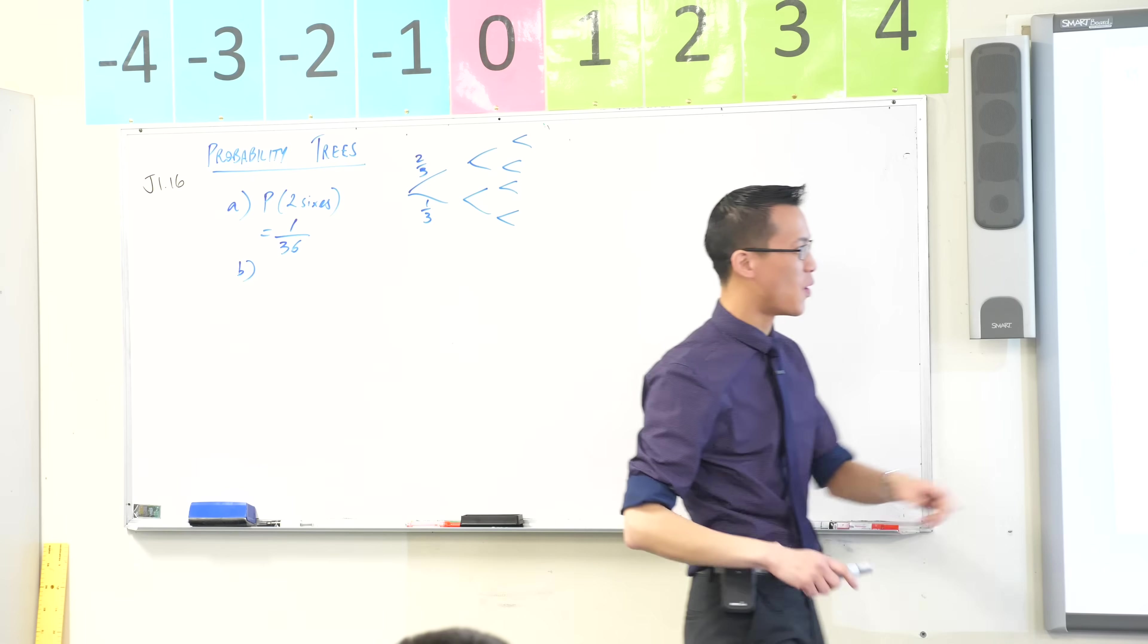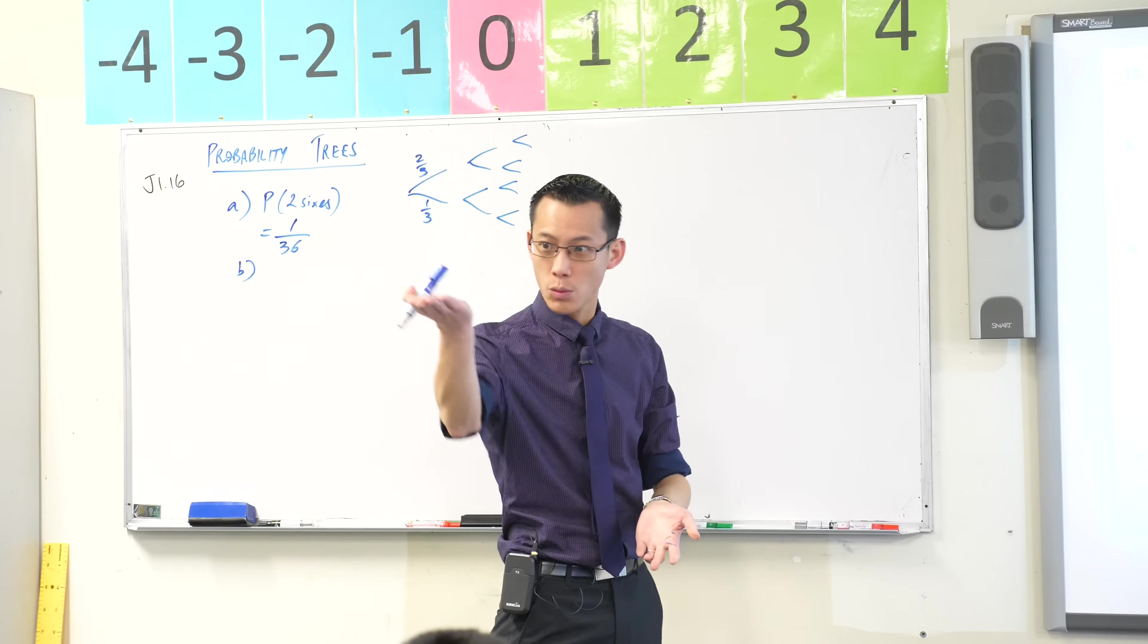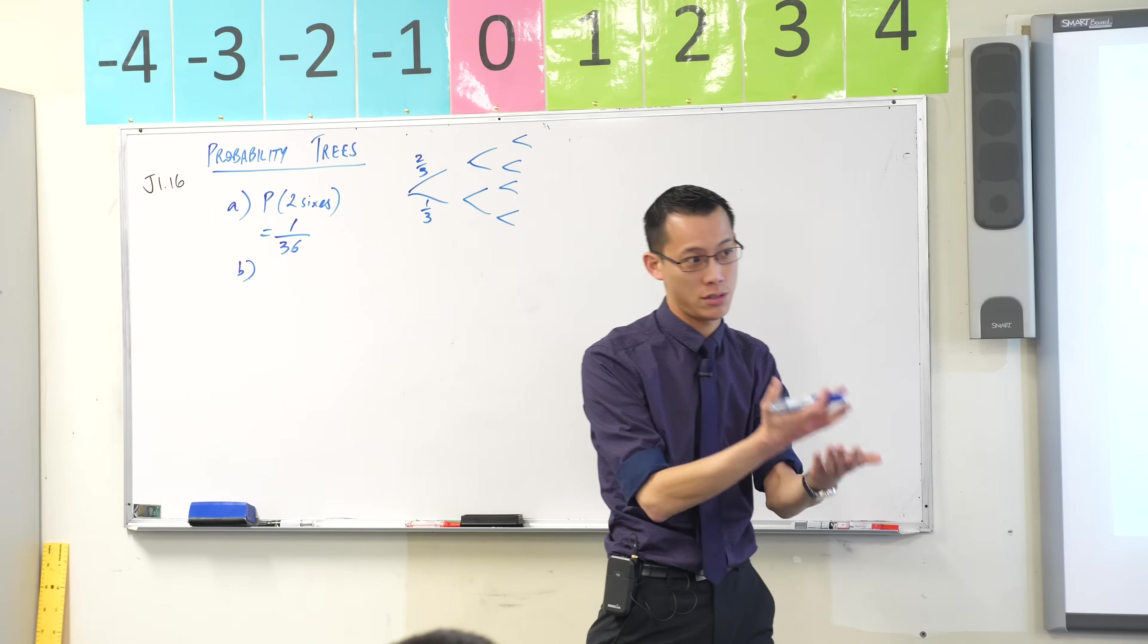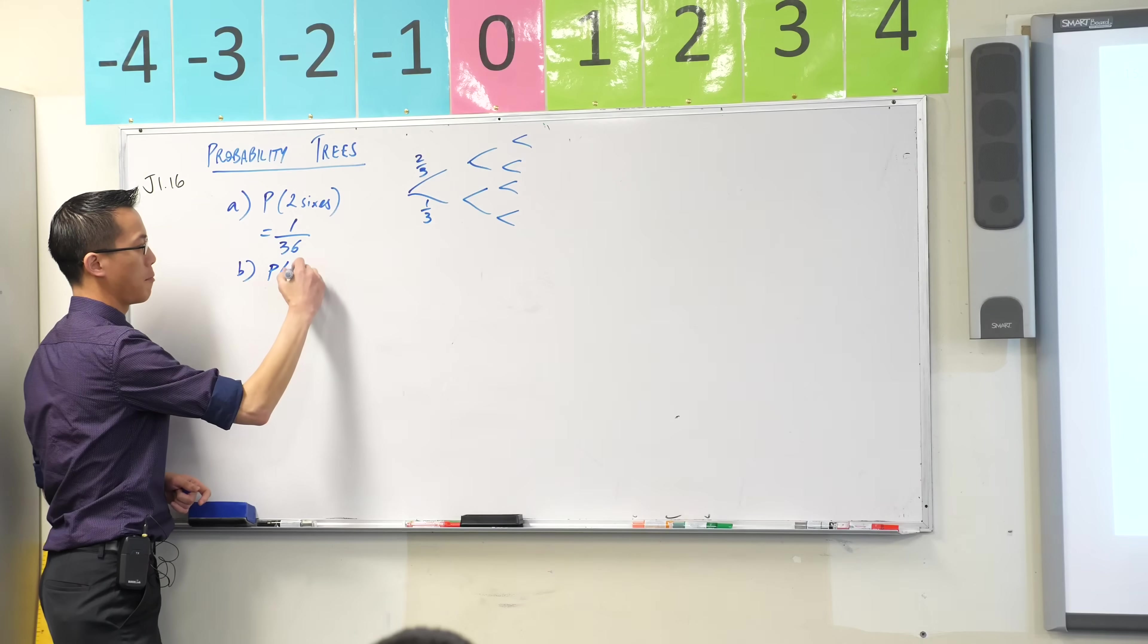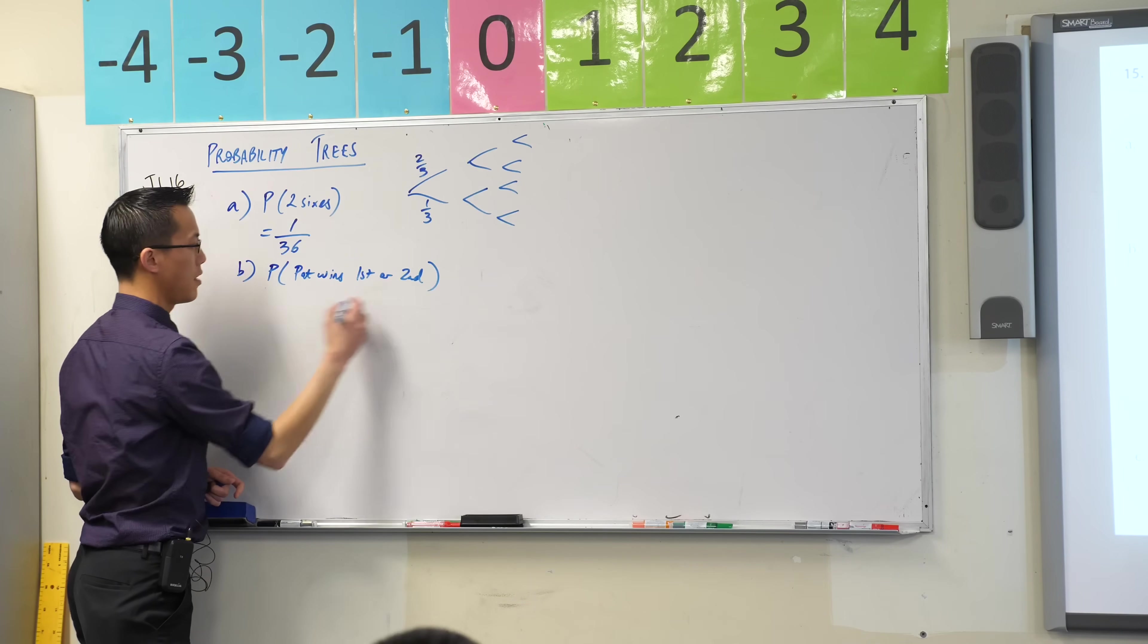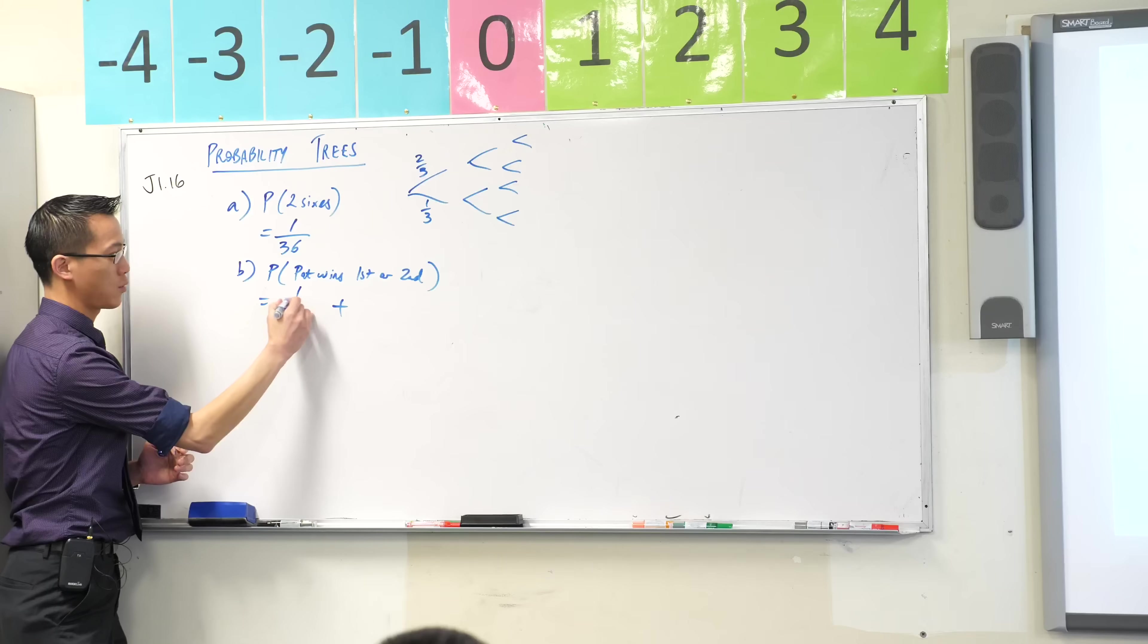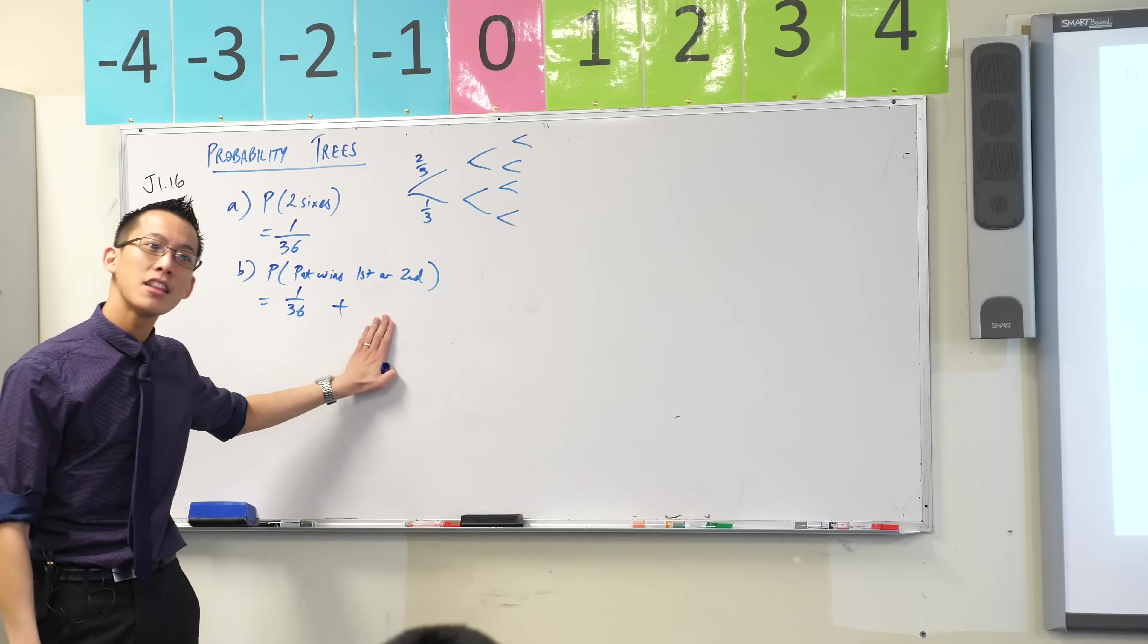Addition, why? It says or. First or second throw. So first throw will have its probability, we actually just worked that out. Second throw will also have its probability. The or indicates you're going to add those two together. So I'm going to write probability Pat wins first or second. So I know I'm going to be adding two things together. I've already worked out his probability of winning on the first throw, that's one on 36, that was part A.